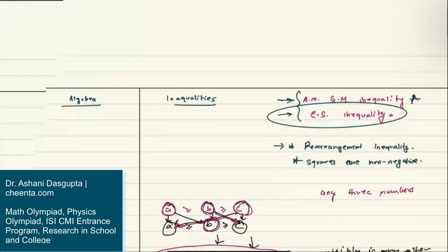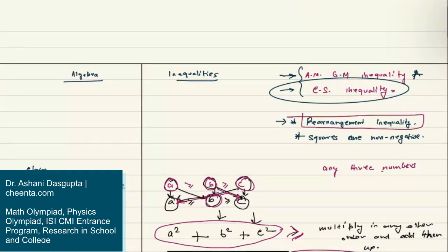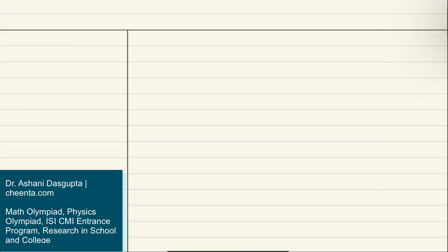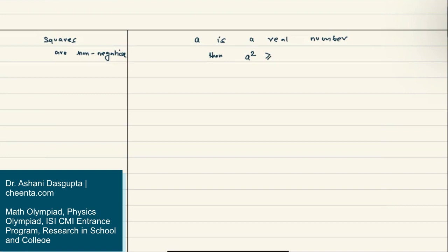Now, another strategy is called 'squares are non-negative.' This is a very powerful strategy — its simplicity should not deceive you. Squares are non-negative means that if a is a real number, then a² — if you multiply a with itself — it will be greater than or equal to zero.